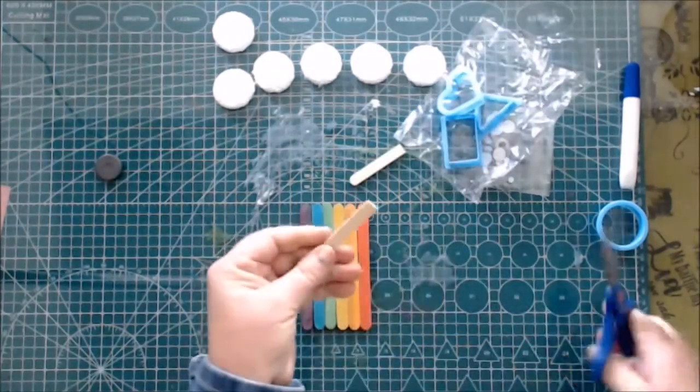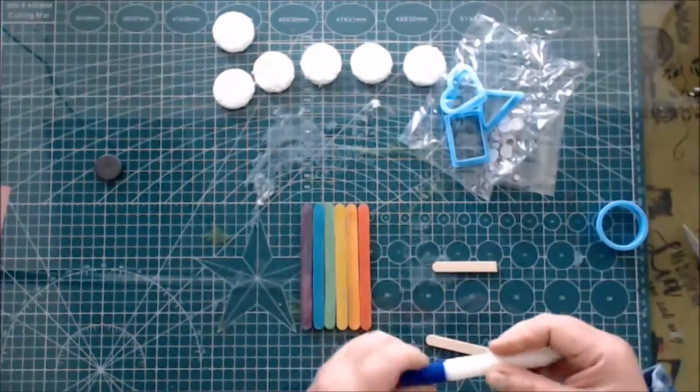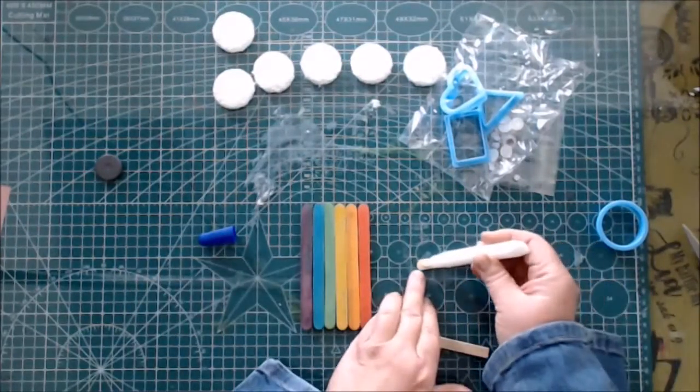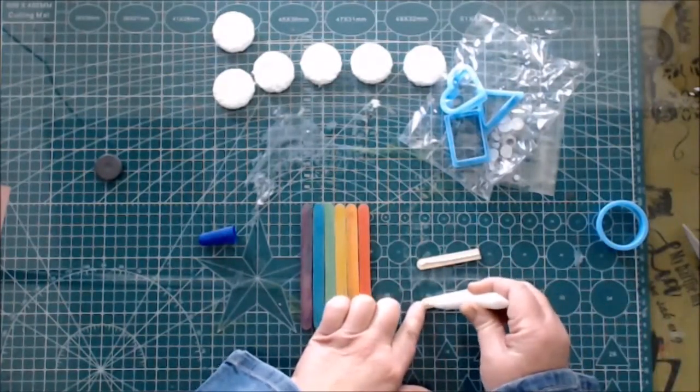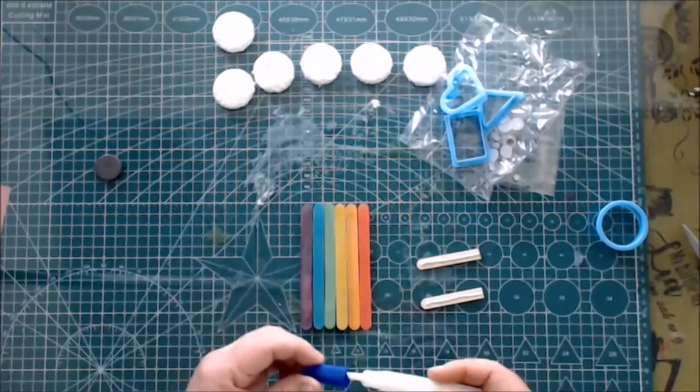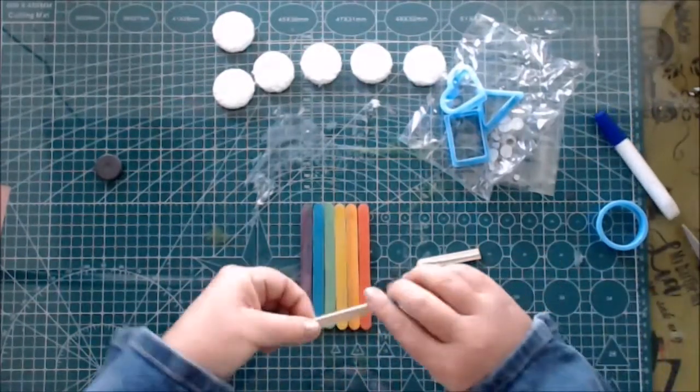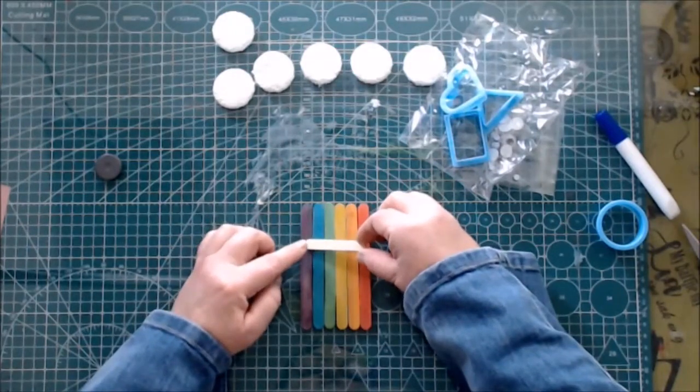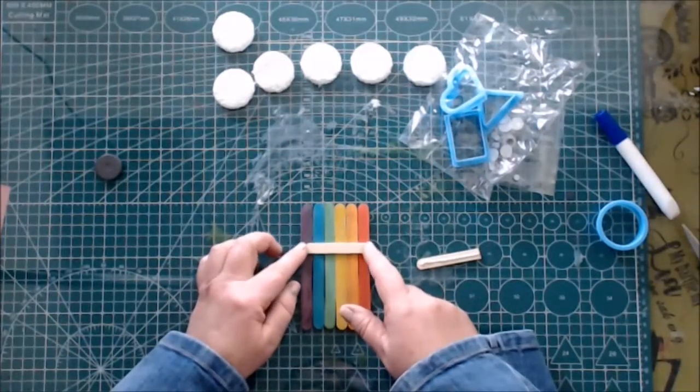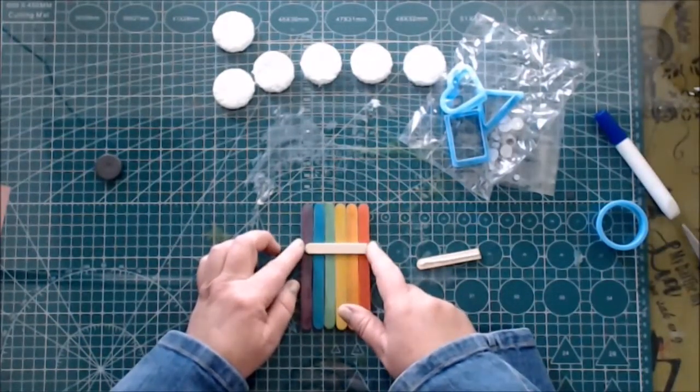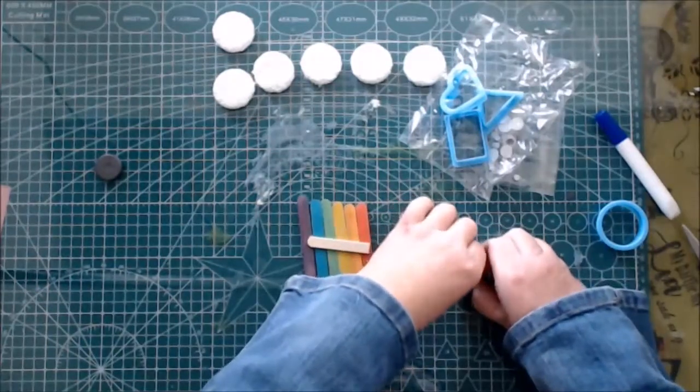After you have cut it, take your tube of glue and put some glue on both of these neutral tone popsicle sticks. Just close the lid of your glue. Be very careful and then you put one piece towards the top and then another piece towards the bottom. Be very careful because the glue is still wet and everything can still move around.